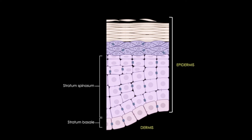Next, we have the stratum spinosum: keratinocytes attached to each other by desmosomes on spiny processes. Then the stratum granulosum: keratinocytes which contain numerous basophilic granules in the cytoplasm. And finally, we have the stratum corneum—the thin layer of dead cells devoid of nuclei and organelles, which can sometimes look wispy in sections.